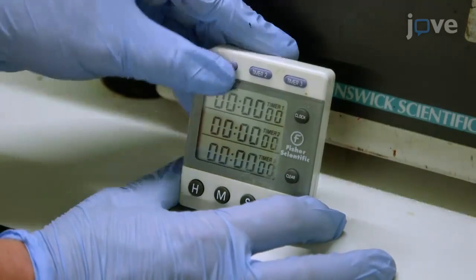Take samples of the culture at regular intervals to the end of the time course. Add each sample to one of the prepared centrifuge tubes.